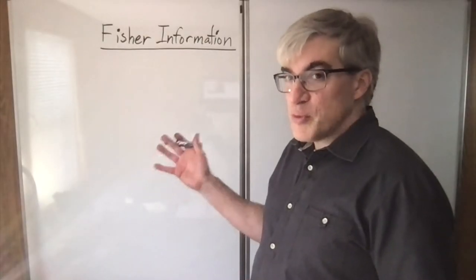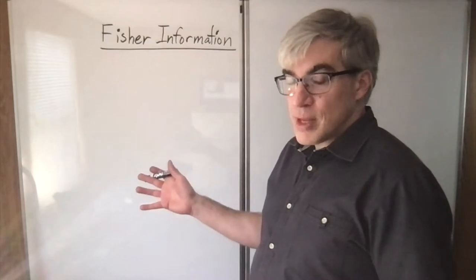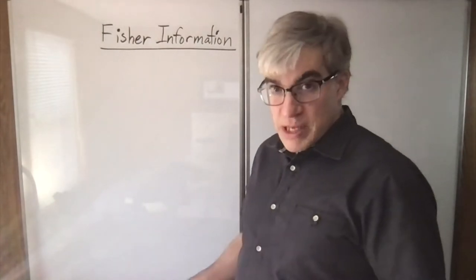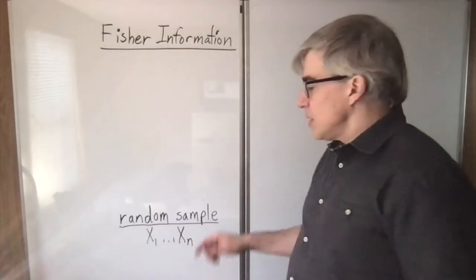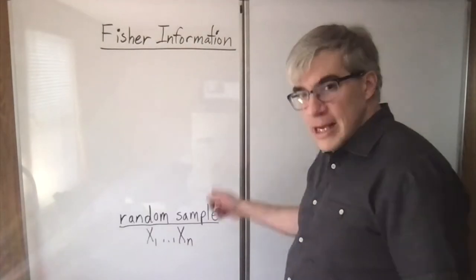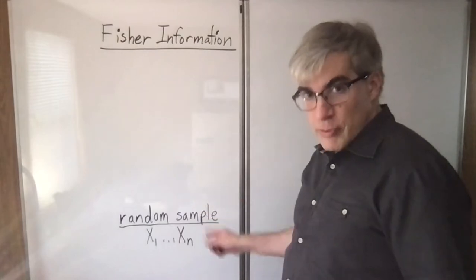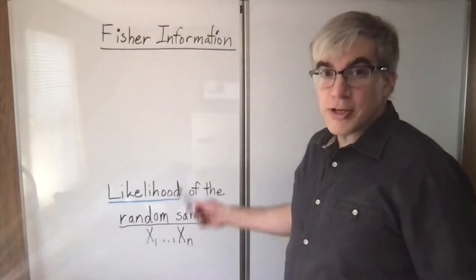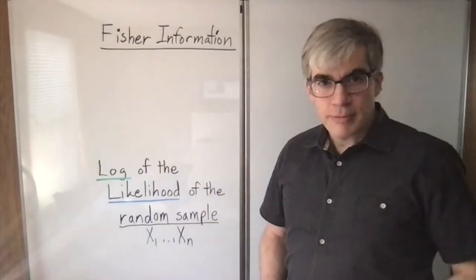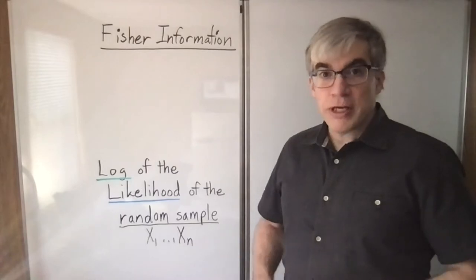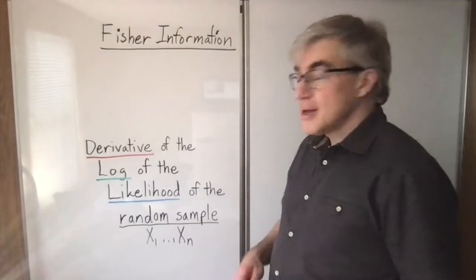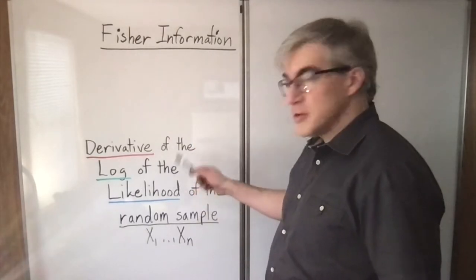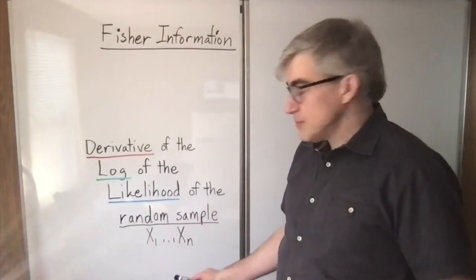What is the Fisher information? You start with a random sample, then you find the likelihood of the random sample. Now we're going to take the log of the likelihood of the random sample. Now we're going to take the derivative — so now we have the derivative of the log of the likelihood of the random sample.